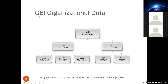Another example is GBI, which stands for Global Bike. They sell bikes. The GBI enterprise has two company codes: one branch is the US company and another is the German company. So GBI consists of two companies — one in the United States and another one in Germany — and GBI as a whole is represented by a single client.